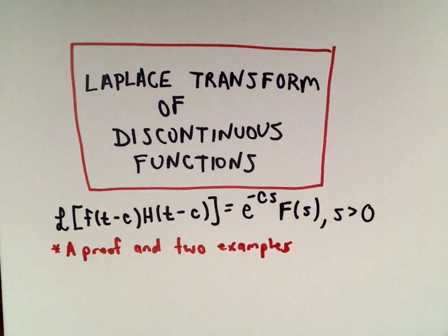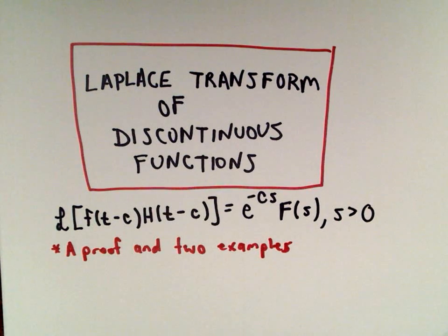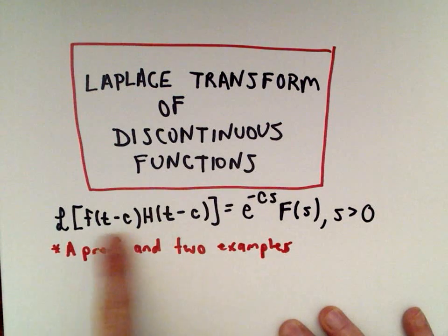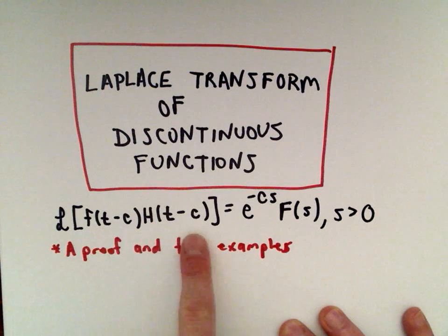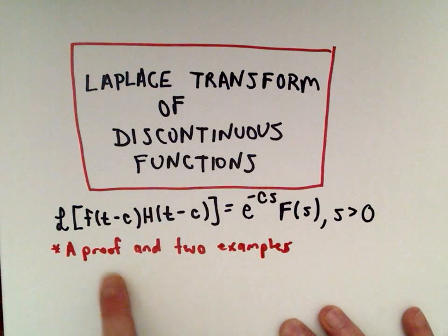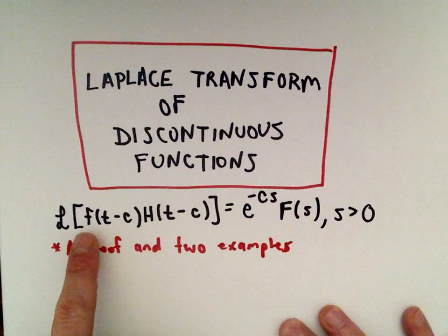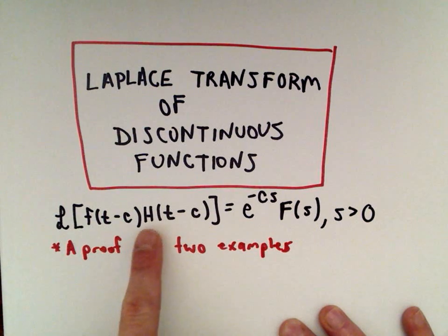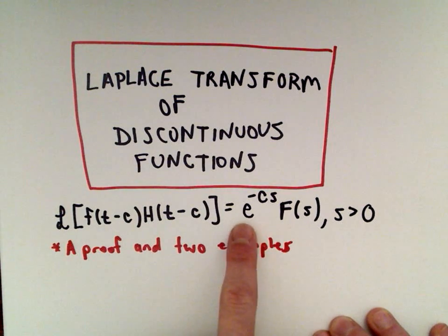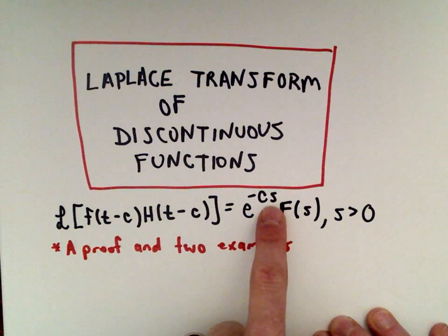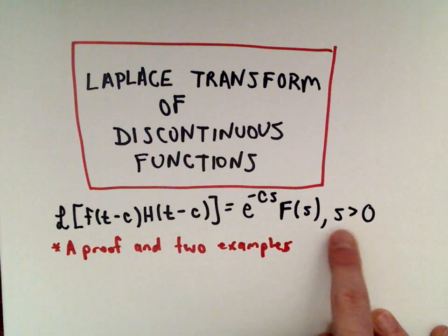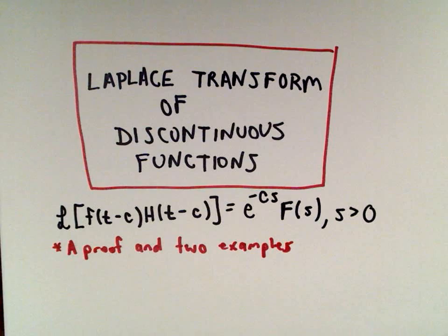In this video, I want to talk about the Laplace transform of discontinuous functions — in this case, Heaviside functions. We're going to justify this formula and give a proof for it. The Laplace transform of f(t − c) multiplied by h(t − c) equals e to the negative c times s, multiplied by capital F(s), where s is greater than zero.